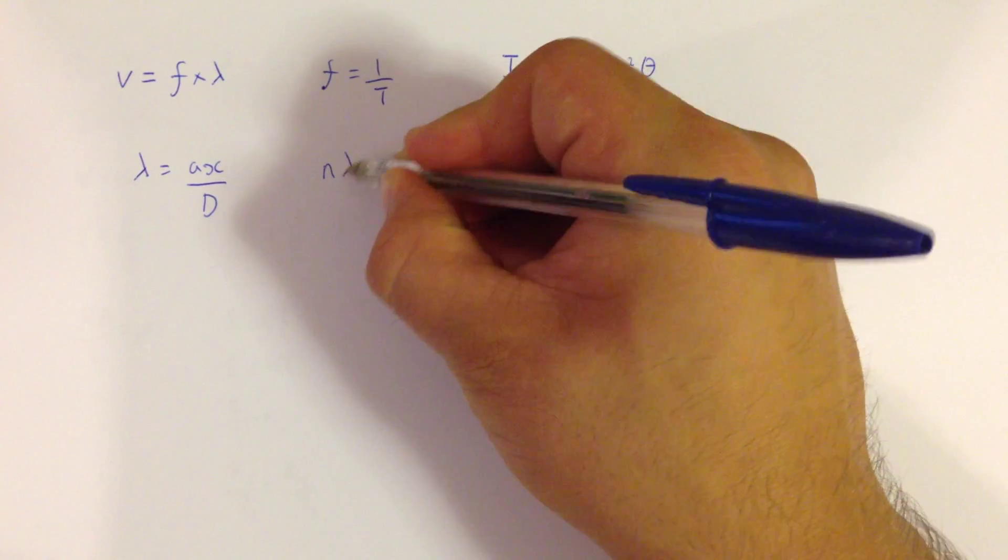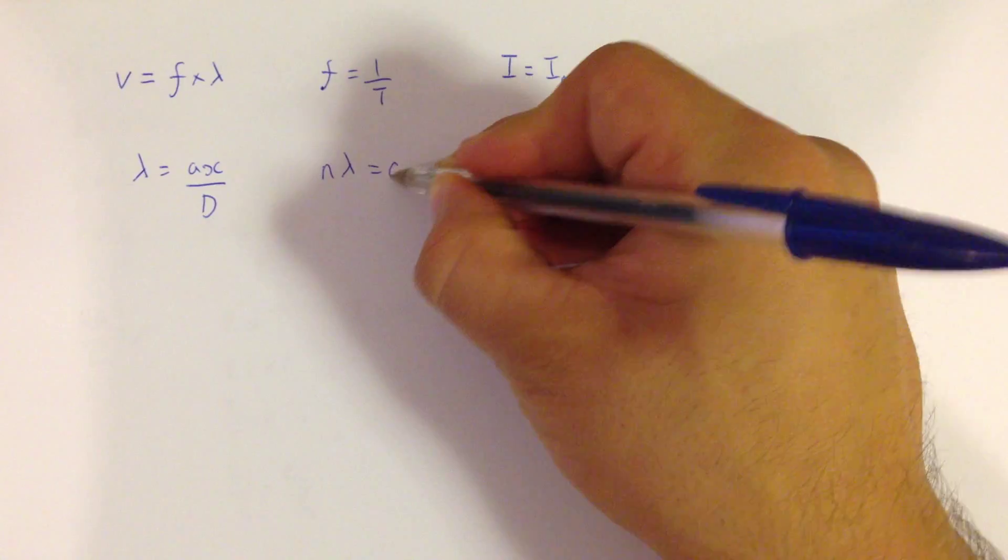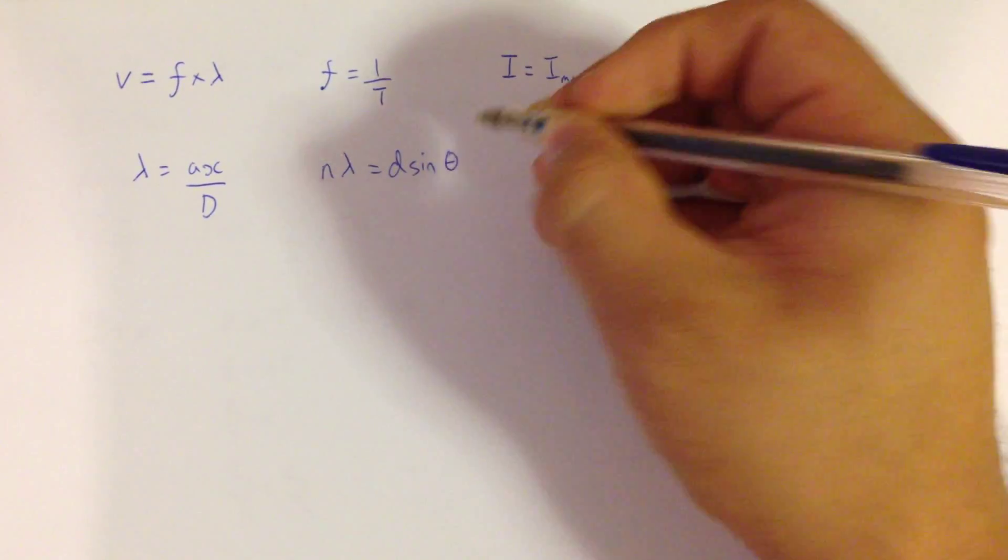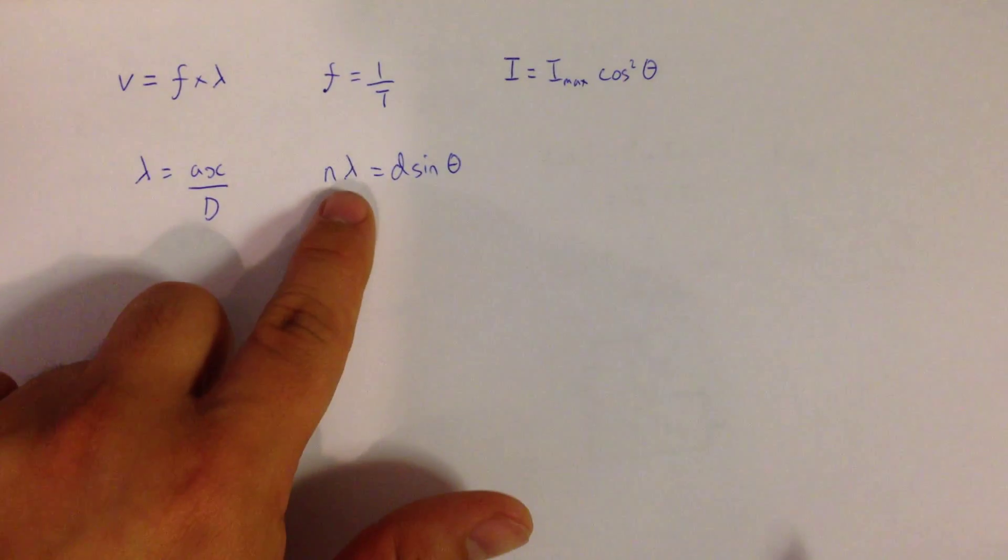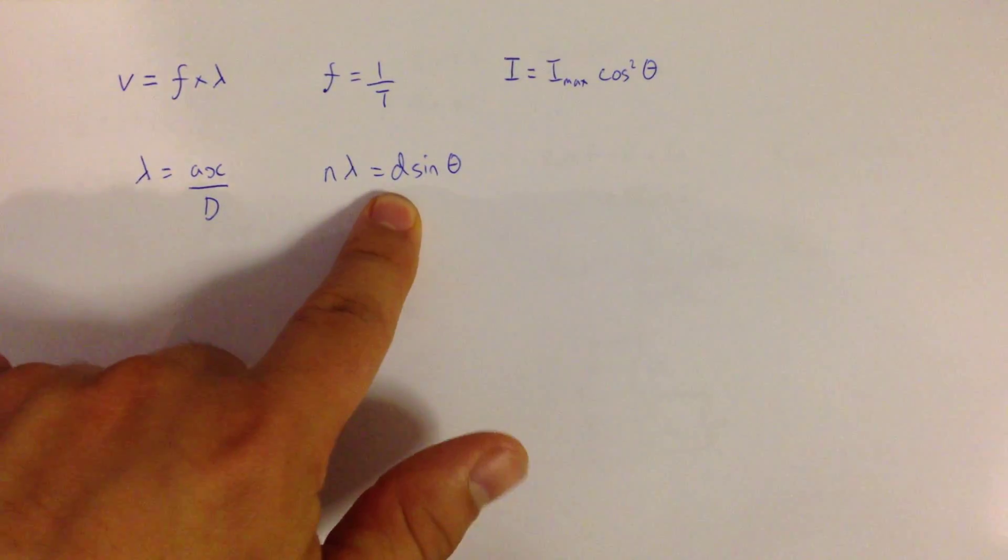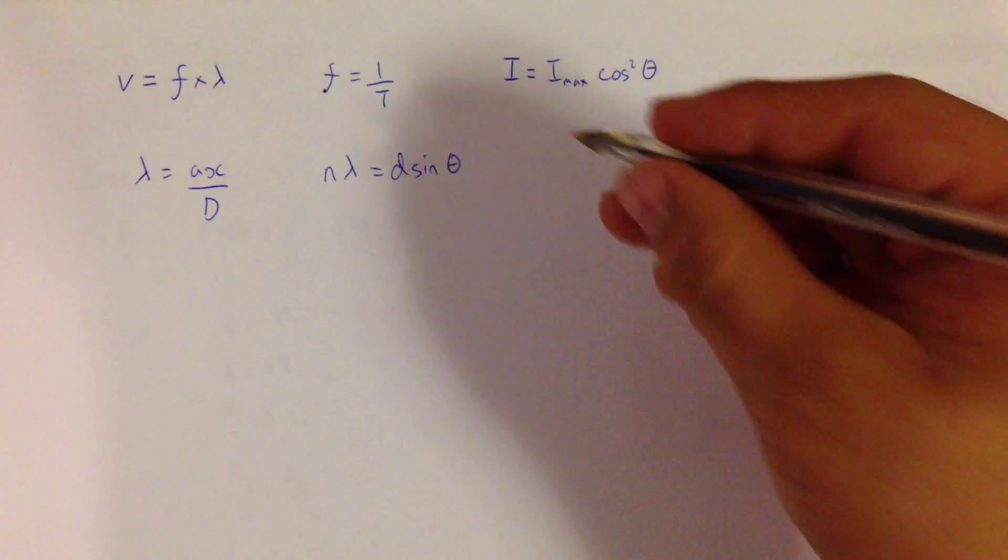Following on from that, you get the diffraction grating equation, which is n lambda is equal to D sine theta, where n is the order, so the fringe that we are discussing, lambda is the wavelength, D is the distance between the slits on the diffraction grating.